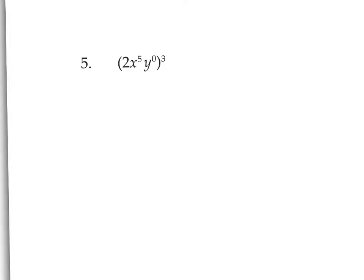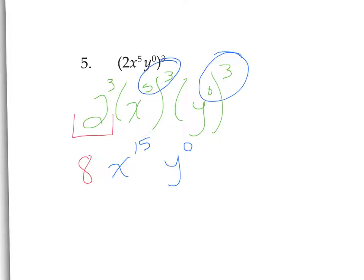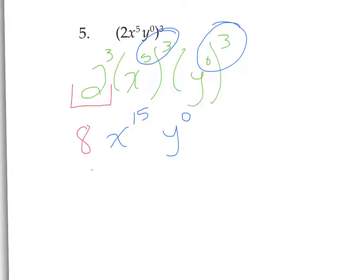On number 5, we're going to use some of the rules we learned before to put this cube on every base in this parentheses. The 2 is going to get the cube, the x to the 5th, and the y to the 0 are each going to get a cube. So we'll rewrite it as 2 cubed, x to the 5th cubed, y to the 0 cubed. 2 cubed makes 8. For x to the 5th cubed, we multiply the exponents, giving x to the 15. The same rule applies to y: 0 times 3 is 0, so we still have y to the 0, which equals 1. So we have 8 times x to the 15 times 1, which simplifies to 8x to the 15th power.